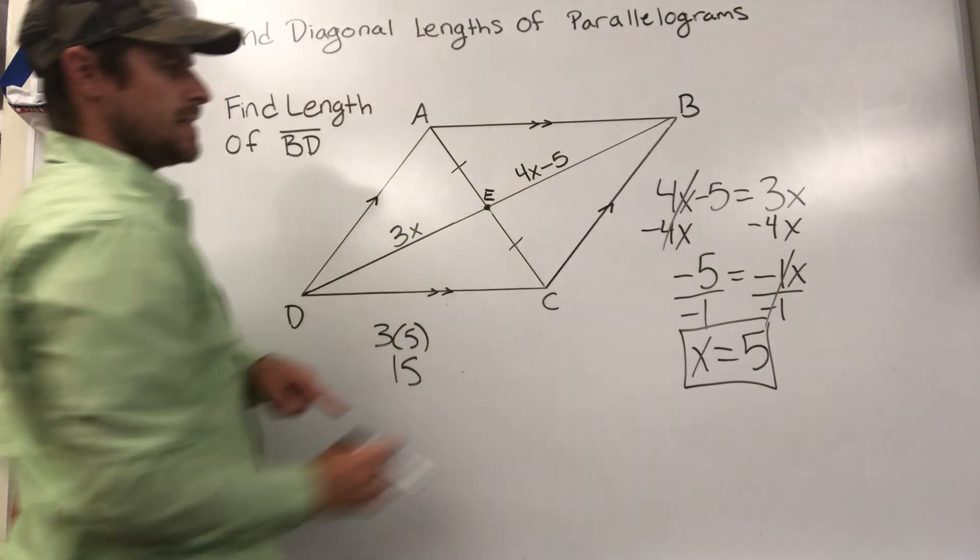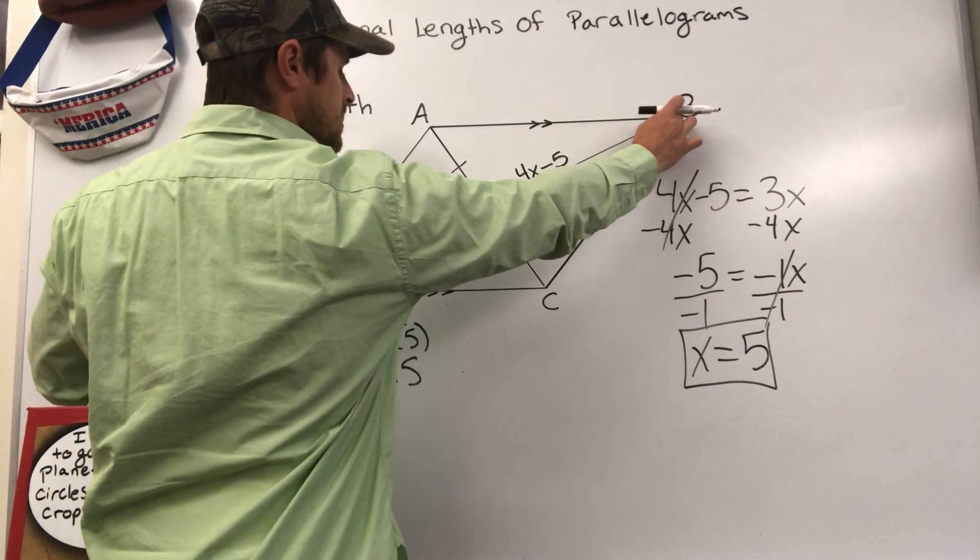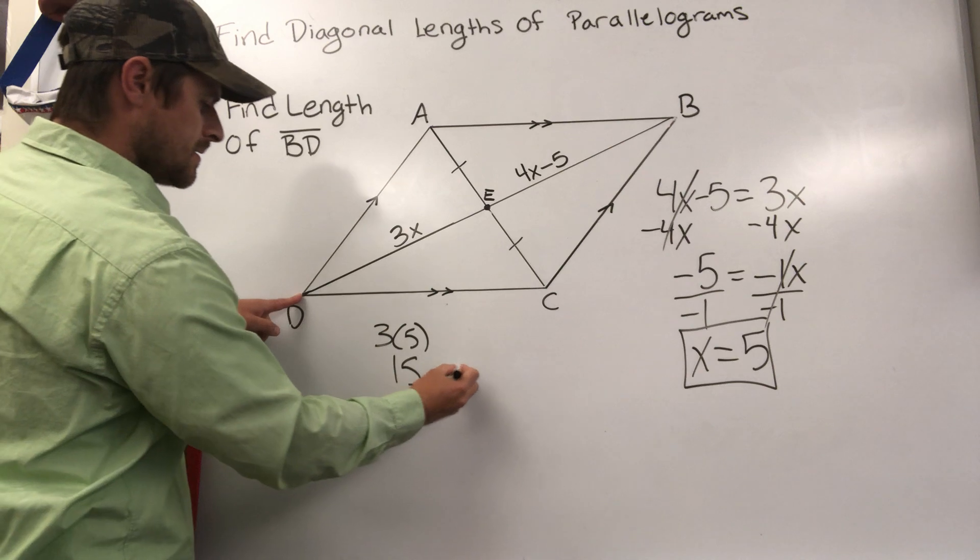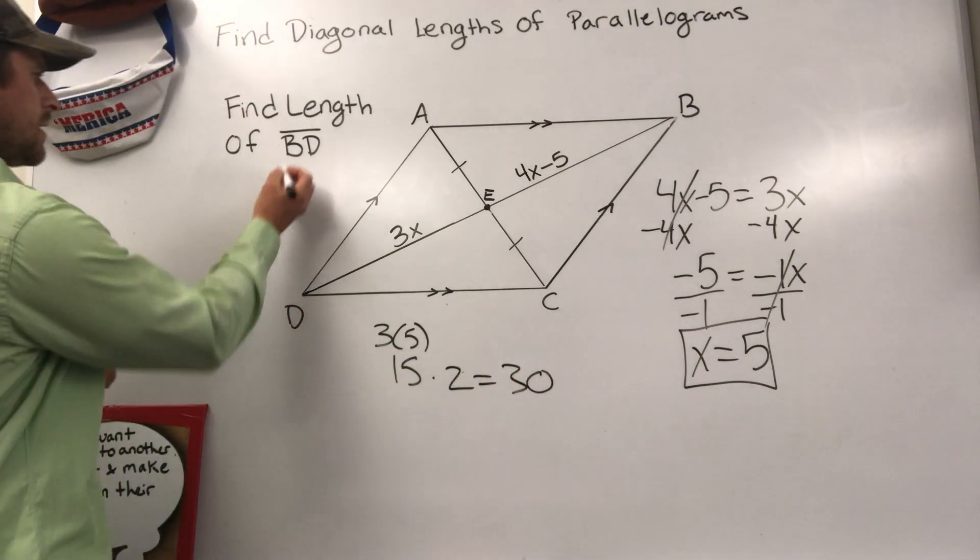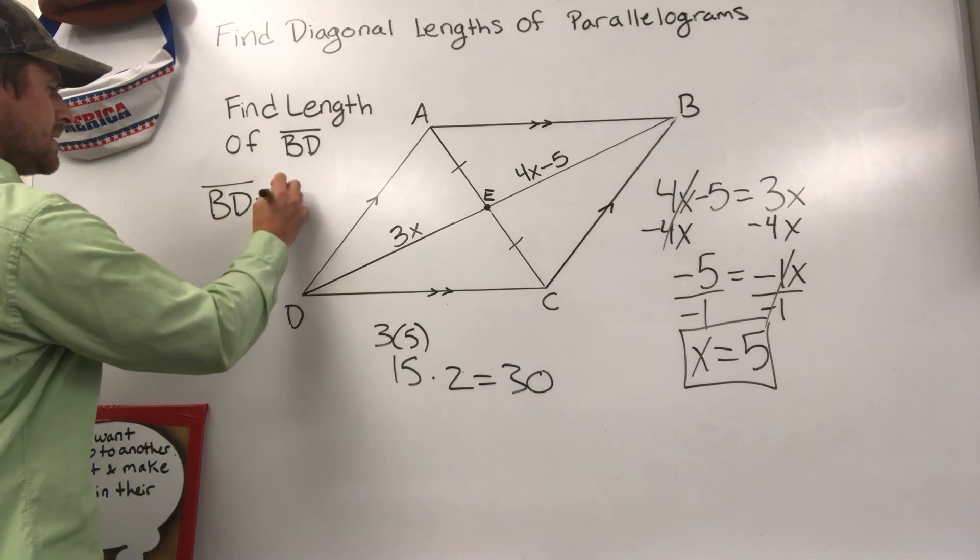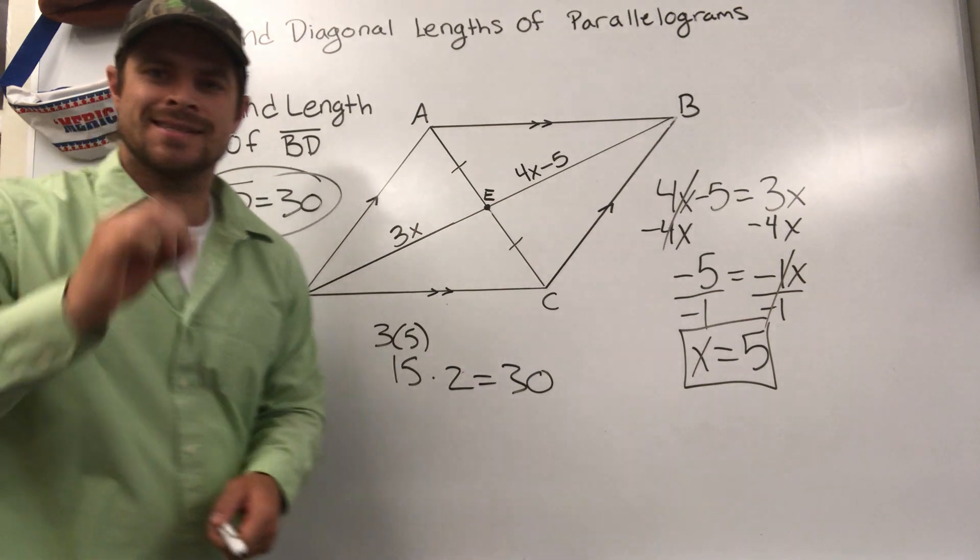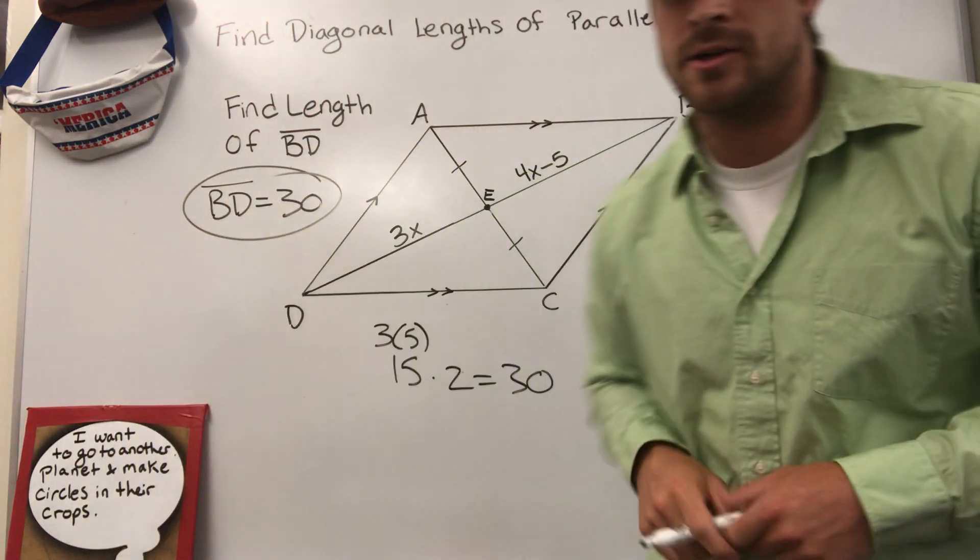If this is 15 inches, this is also 15 inches, and they want to know what BD is all the way across. So two 15s make 30. Our answer here is line segment BD is 30. Hopefully this makes sense, study hard and good luck on your upcoming test.